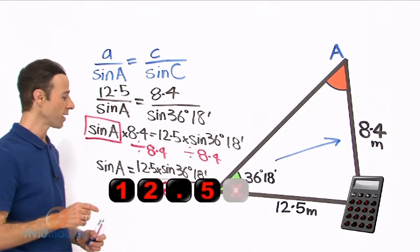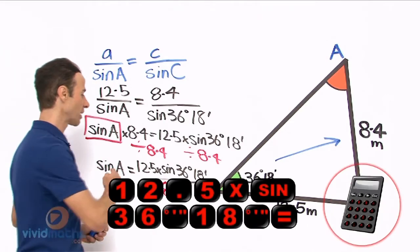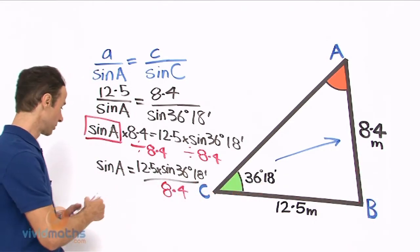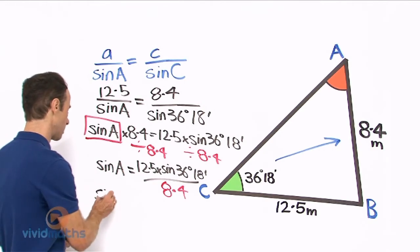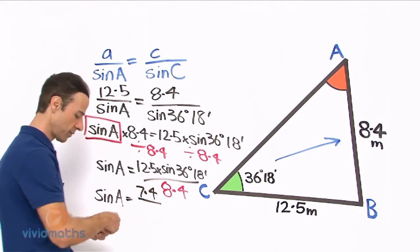Now that top part is going to turn into 7.4 all over the existing that we are dividing by 8.4.